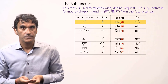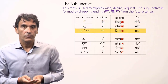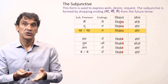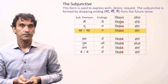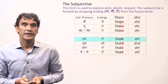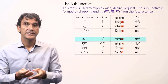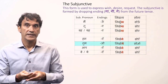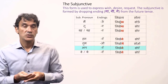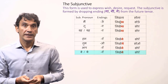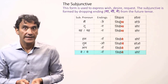For tu (you singular), the subjunctive forms are likhe and so. For wo/ye (he, she, it — third person singular), it is likhe and so. For hum, the ending is -en, so the subjunctive forms are likhen and soen. For tum, the ending is -o, giving likhho and so. For aap, the forms are likhen and soen. And for ve/ye/de, the ending is -en, giving likhen and soen.